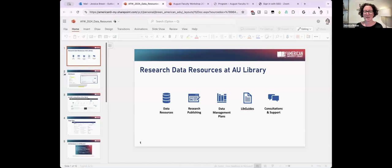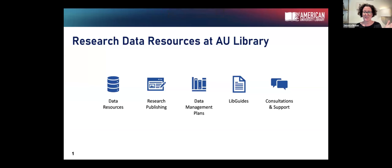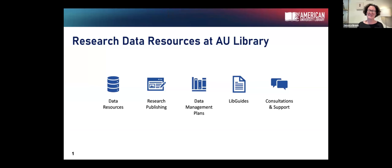I have my own set of slides — they're being a little uncooperative. I'm Jessica Breen from the University Library. I'm going to talk about the research data resources specifically available through the AU Library. As an academic research library, we have quite a few — everything from actual data resources to assistance with research publishing, data management plans, libguides, and consultations and support with actual individuals.